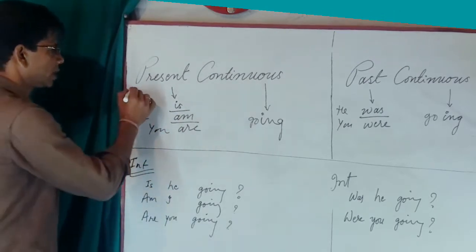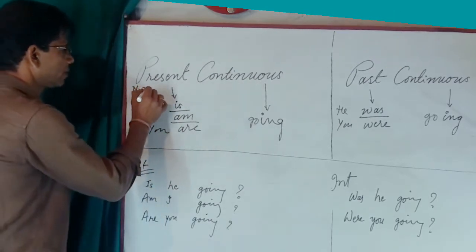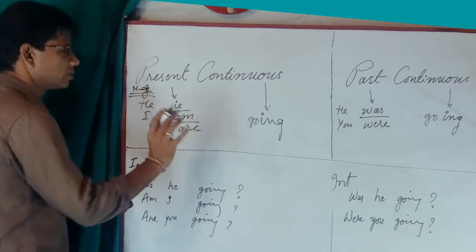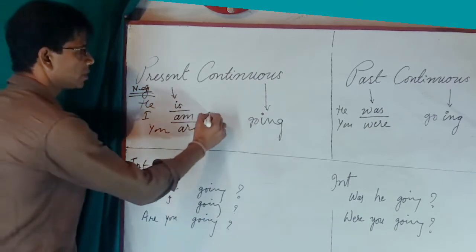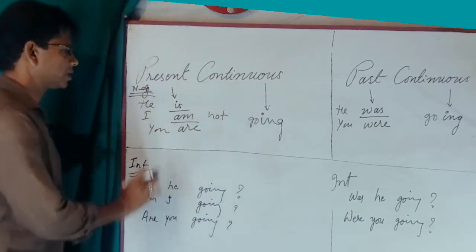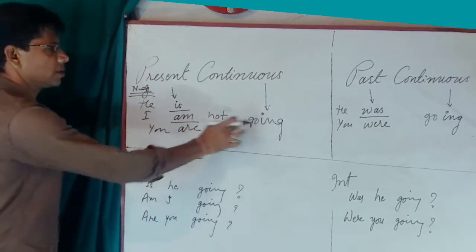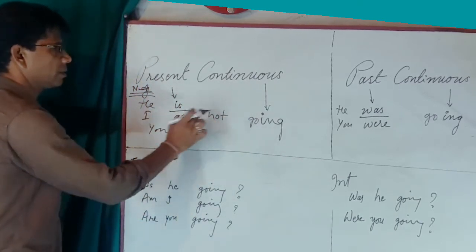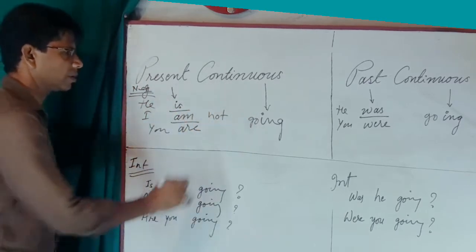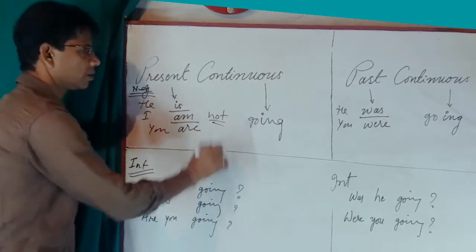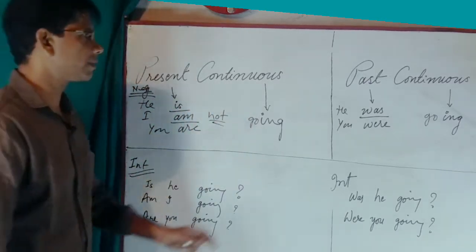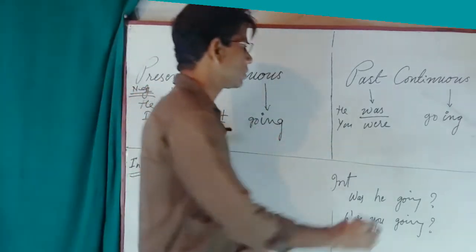For negative sentences, you just have to use 'not' at the third place. In present continuous: he is not going, I am not going, you are not going — only 'not' at the third place.